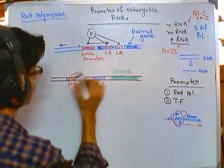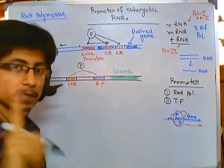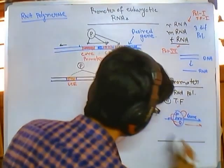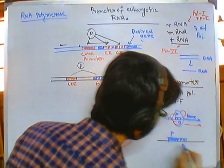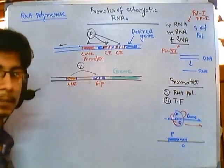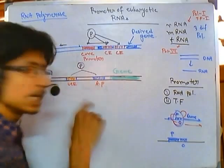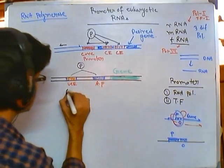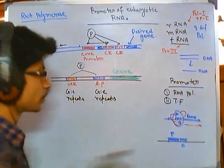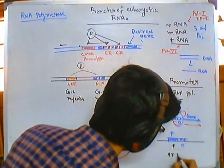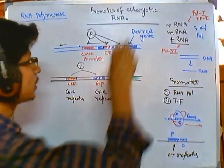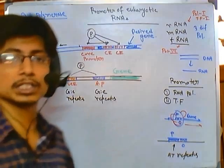Both the upstream control element and the actual promoter together are called the promoter — that is a very important concept. In prokaryotes, the promoter is a single stretch of segment, but in eukaryotes we have segmented portions as a promoter. Also, while we find AT repeats in all promoters of the prokaryotic system, in the eukaryotic rRNA promoter we have GC repeats.